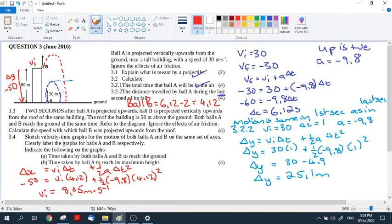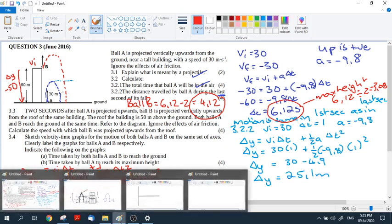So now it says to you, sketch the velocity time graphs for the motion of both balls A and B on the same axes. Clearly label the graphs for A and B. Then it says to you, the time taken for both balls A and B to reach the ground. So this one is what we need. And then it says the time taken by ball A to reach maximum height. So this was ball A's travel. So maximum height is half of this. 6.12 divided by 2, which is 3.06.